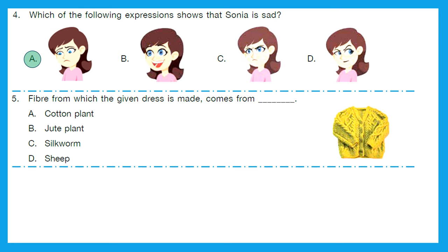Question 5: The fiber from which the given dress is made comes from... So what is this dress? It looks like a sweater, and sweaters are mostly made up of wool. Wool comes from animals. Cotton plant — that's a plant. Jute plant — also a plant. Silkworm gives us silk. The last option is sheep, and this is our right answer. Option D — we get wool from sheep, and sweaters are made of wool.